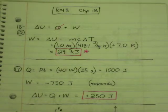Number 17, 40-watt heat source is applied to a gas. The gas expands and does work of 250 joules on its surroundings. By how much does the internal energy of the gas change?